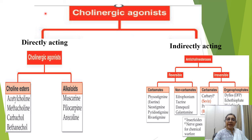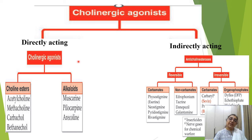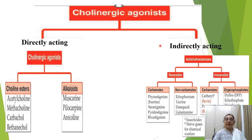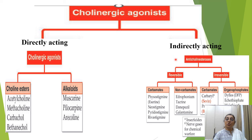Cholinergic agonists can be divided into directly acting and indirectly acting. Directly acting drugs act by binding with parasympathetic receptors — nicotinic and muscarinic — and stimulate those receptors. Indirectly acting drugs do not bind with the receptor but inhibit the destruction of acetylcholine by inhibiting anticholinesterase. So they are called anticholinesterase drugs.